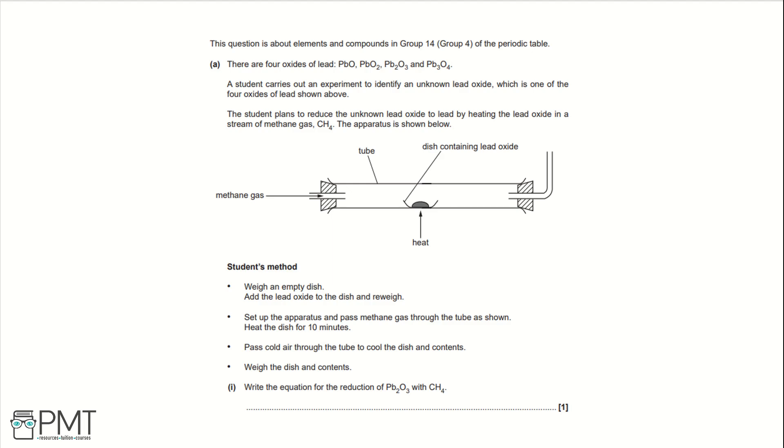Write the equation for the reduction of Pb2O3 with CH4. Let's firstly write our reactants, Pb2O3 plus CH4. We're going to produce lead or Pb and we're going to produce carbon dioxide or CO2 and then water or H2O. Then we need to balance the equation.